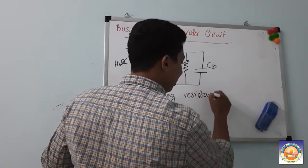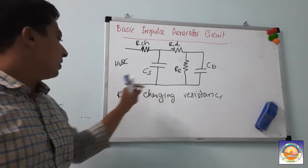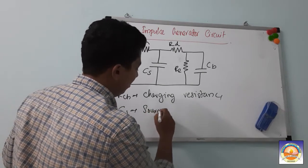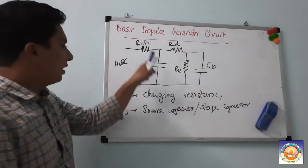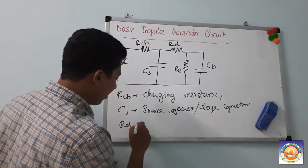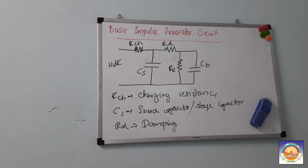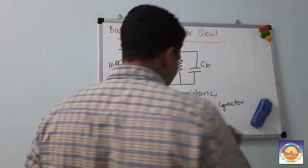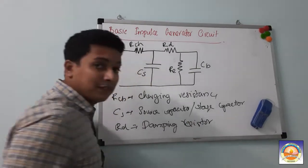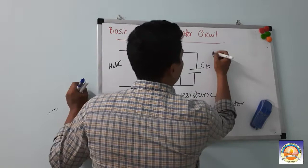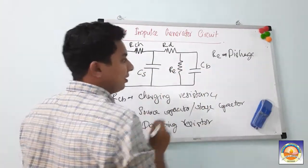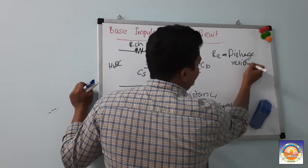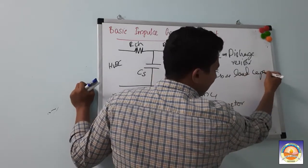The purpose of RCH is that when high voltage is applied, through this charging resistor your source capacitor CS — also called the stage capacitor — gets charged. RB is known as the damping resistor. RE is the discharge resistor — it is the path through which CS as well as CD discharge. CB is the load capacitor.